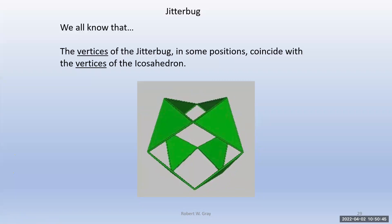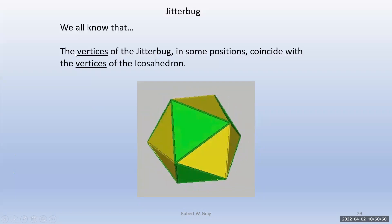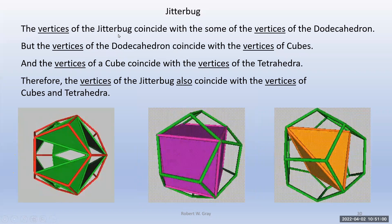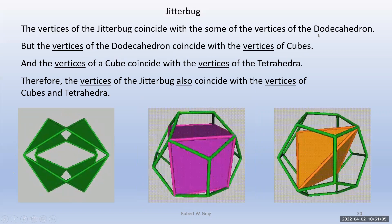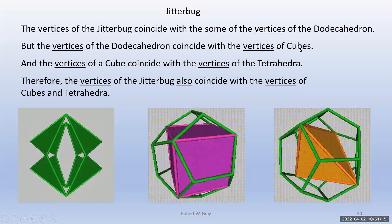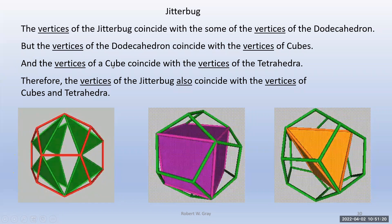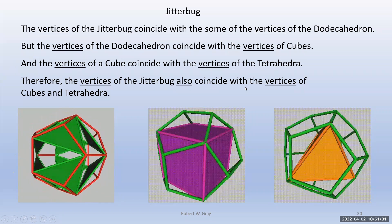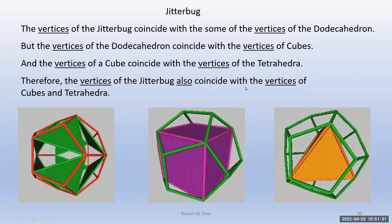We all know Fuller would do the jitterbug motion and then insert extra struts to show the icosahedron — the vertices of the jitterbug in some position coincide with the vertices of the icosahedron. I also found that the vertices coincide with some vertices of the dodecahedron, which I hadn't heard of before. The dodecahedron's vertices coincide with vertices of five cubes, and the cube's vertices coincide with ten tetrahedra, so the jitterbug vertices also coincide with vertices of cubes and tetrahedra.